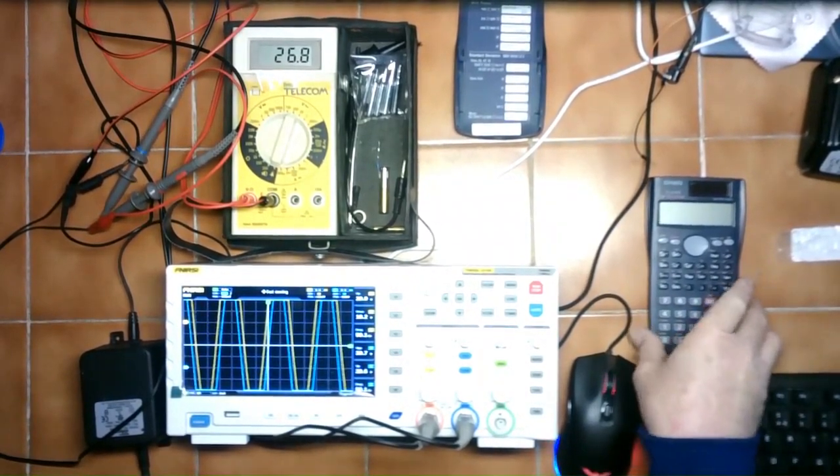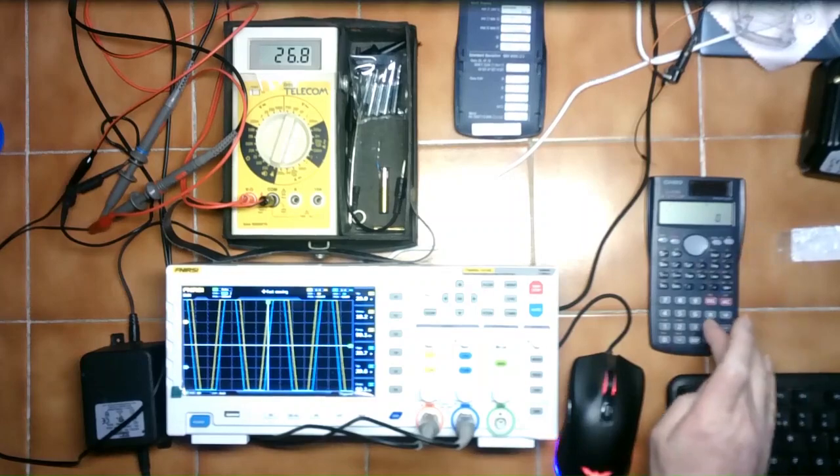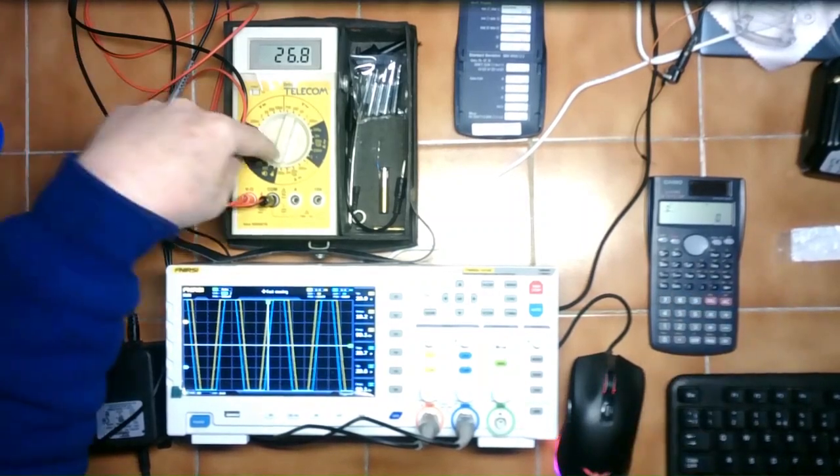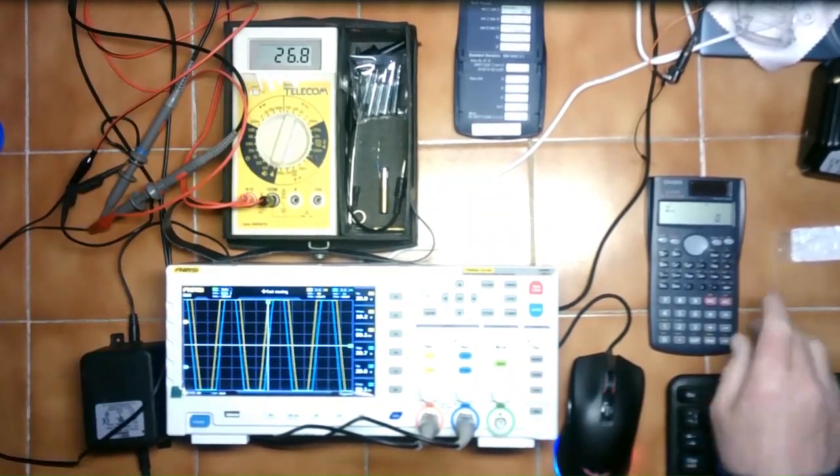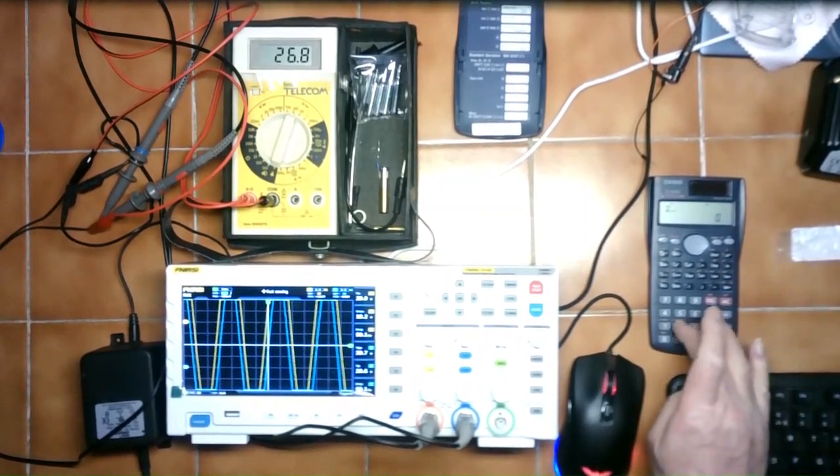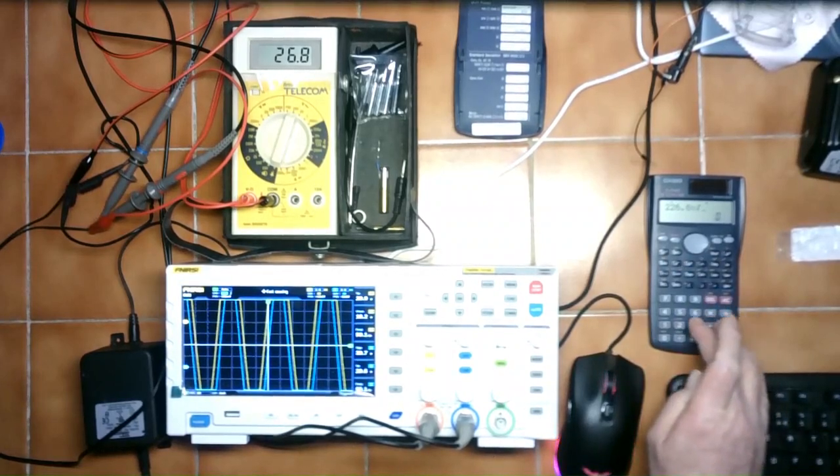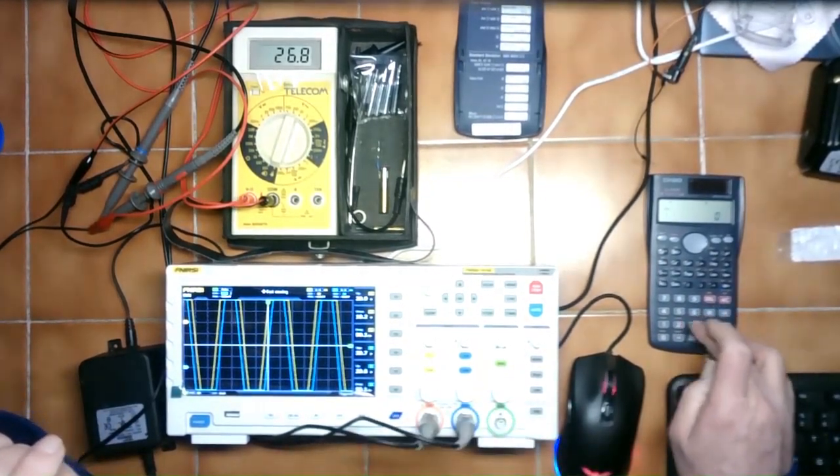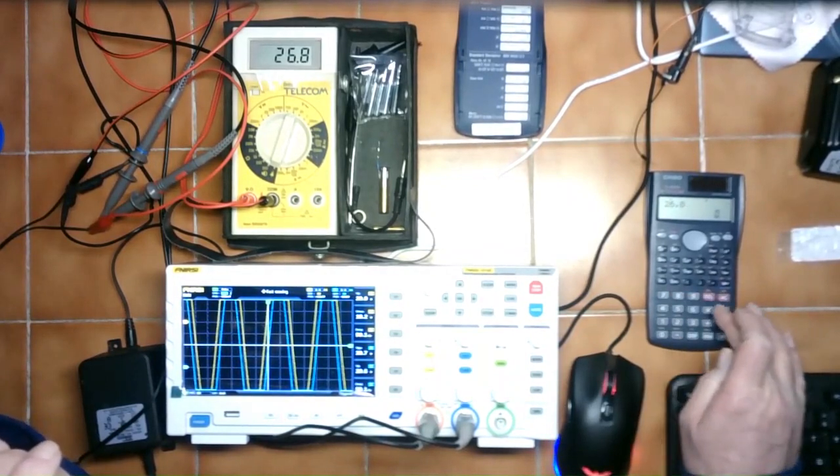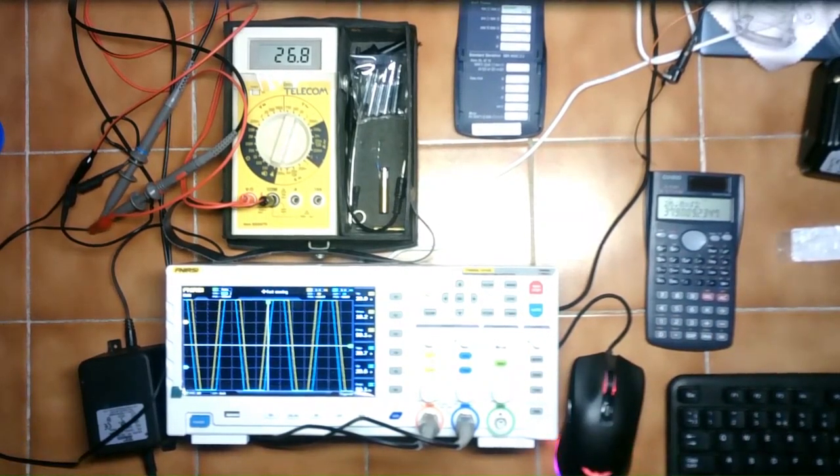So first of all, on a 27 volt RMS power supply output, if you did the calculation for that, I'm reading on this which is a true RMS meter on the 200 volt range AC, this is reading 26.8 volts RMS. So if we did 26.8 multiply that by square root of 2, we should get 26.8 times square root of 2 gives an RMS peak of 37.9 volts.